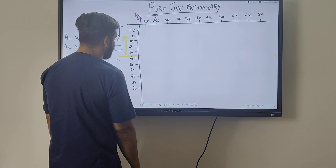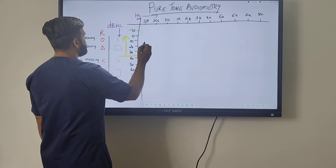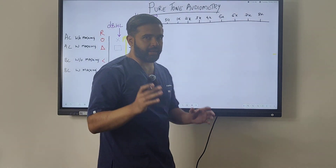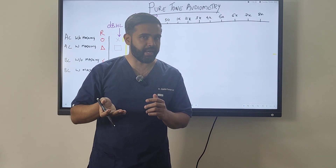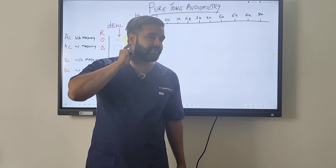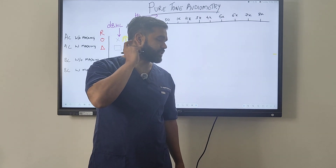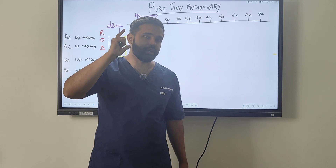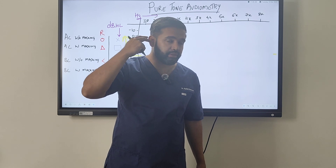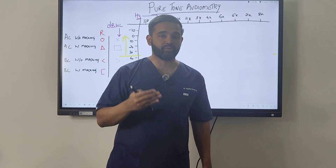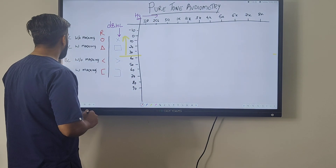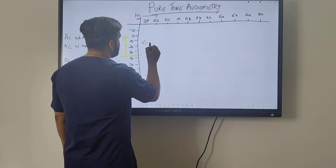In conductive hearing loss, bone conduction becomes better than air conduction — the same as in the tuning fork test — because the problem is in the conductive pathway, not in cochlear stimulation. When the sound vibrator is placed on the mastoid, it directly triggers the cochlea, which is intact. The ossicles, eardrum, or ear canal have a blockage, which is why bone conduction is better than air conduction. In pure tone audiometry, bone conduction will appear normal.